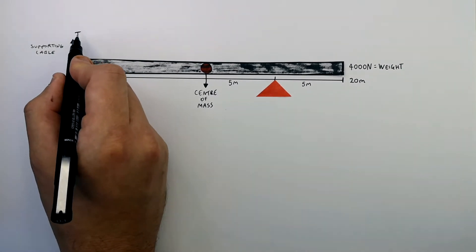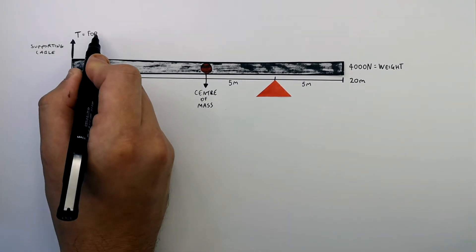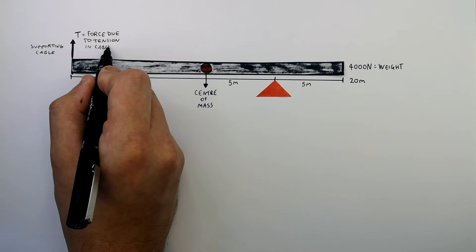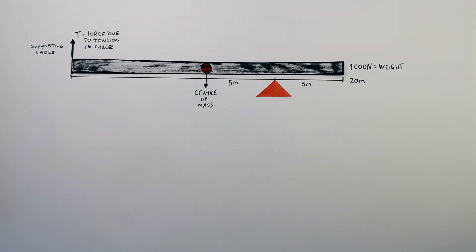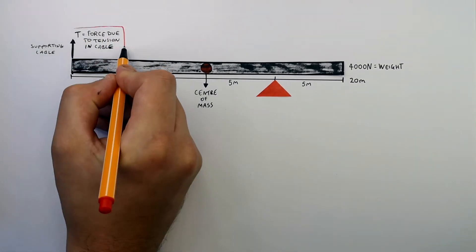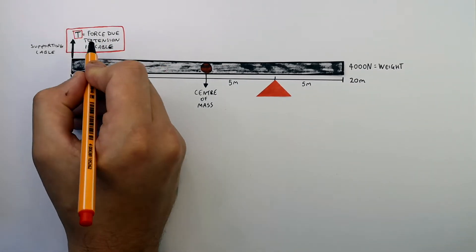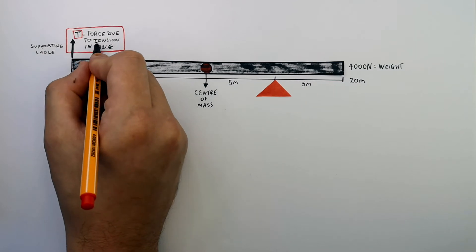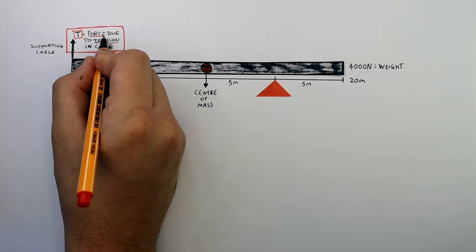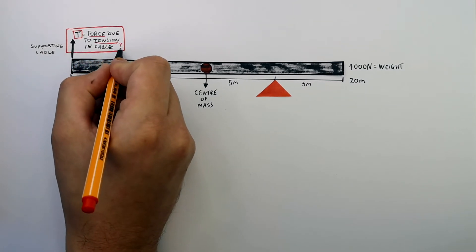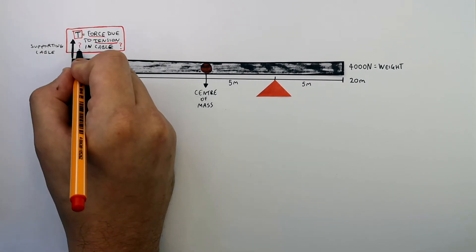T is the force due to the tension in the cable, so T is a force measured in newtons. We're going to calculate the tension in the supporting cable that is attached vertically to the other end of the steel pole.